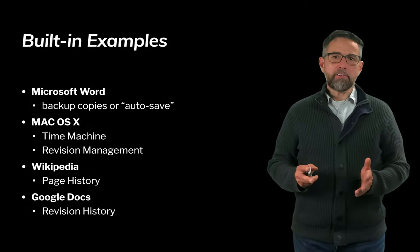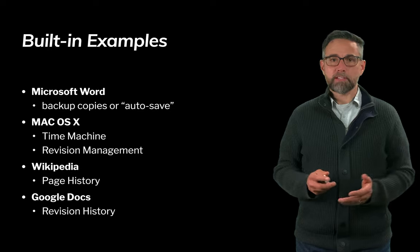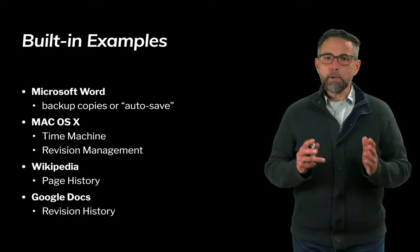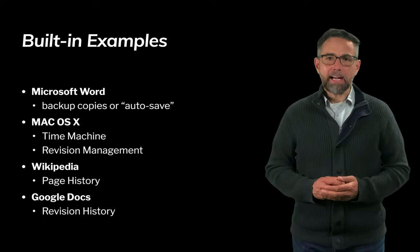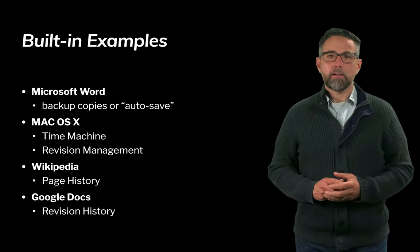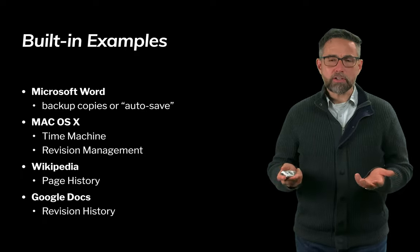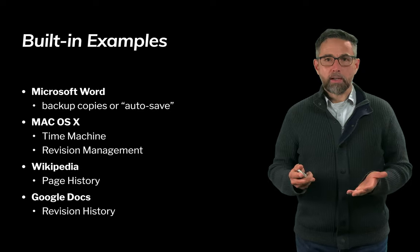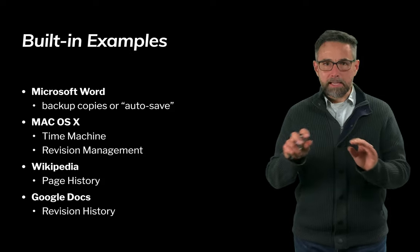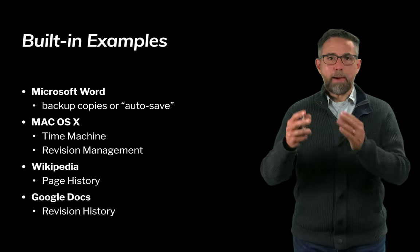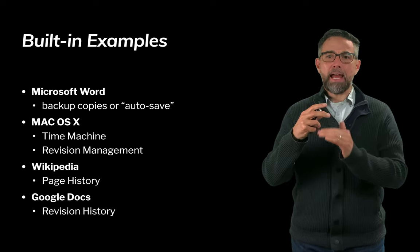You're probably already familiar with version management from features built into software you already use. A basic example is how Microsoft Word keeps backup or autosave copies of a document you're working on — important in case Word crashes or your power goes out. Periodically, Microsoft Word will commit that file, making a copy so you can go back in time and get the most recent uncorrupted version.